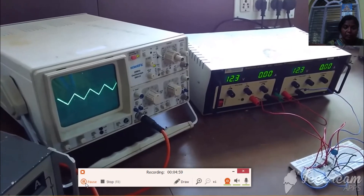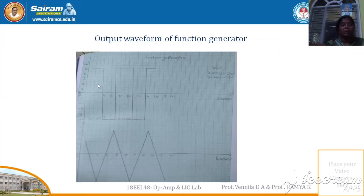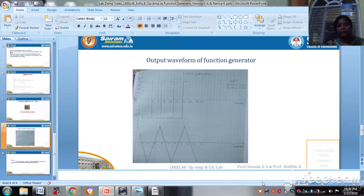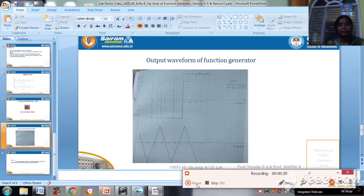We have now seen the practical circuit of the function generator, drawn the output waveforms, and verified the result. The op-amp is realized as a function generator using IC 741 to generate square waveform, sine waveform, and triangular waveform. Thank you students.